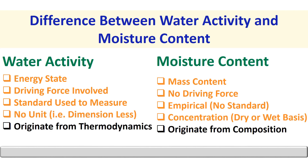Finally, water activity originates from equilibrium thermodynamics, whereas moisture content originates from composition. In the following slides, I will explain each point with appropriate examples.